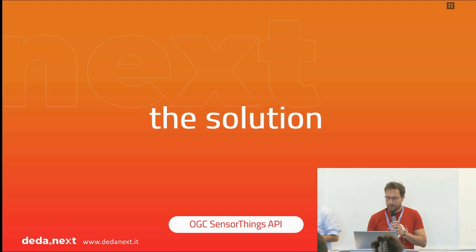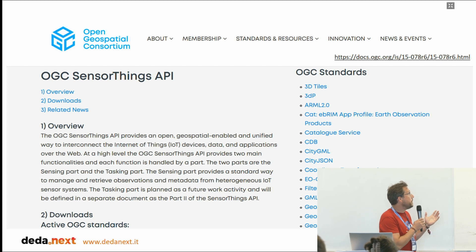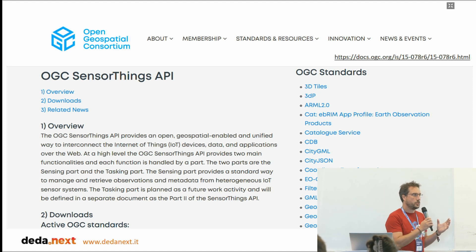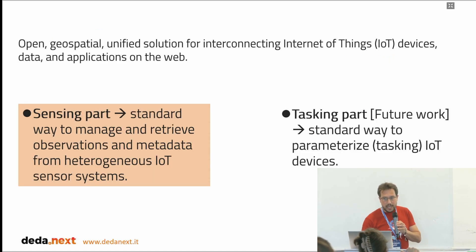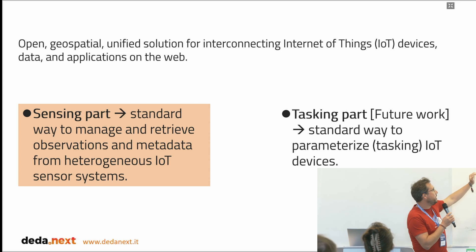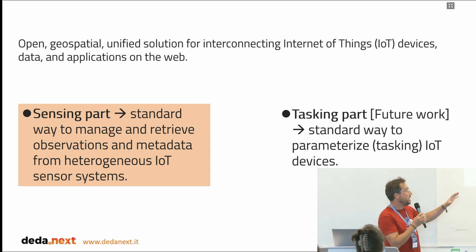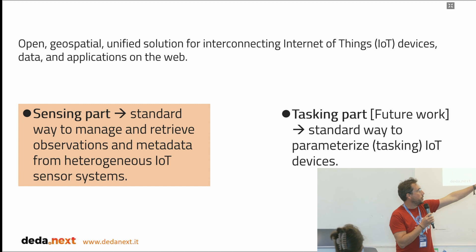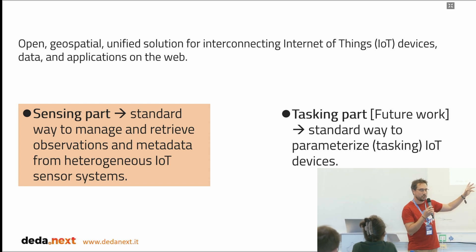Good morning, good afternoon everybody. The solution we found was an existing standard designed to collect, store, and handle sensor data — so time series data. This is an OGC standard, and it currently covers the sensing aspect: actually gathering, collecting, and measuring data from the environment. In the future it will also cover the tasking part — how to communicate orders to sensors in a standard way, like tilting a camera — but that is not currently covered in the standard.